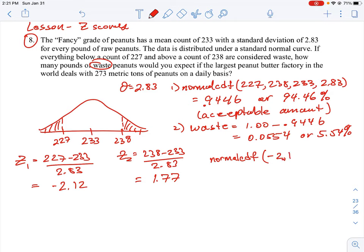So it's -2.12 to 1.77, and if we do that with our calculator, we're going to get the same answer: 0.9446. Either way would work.